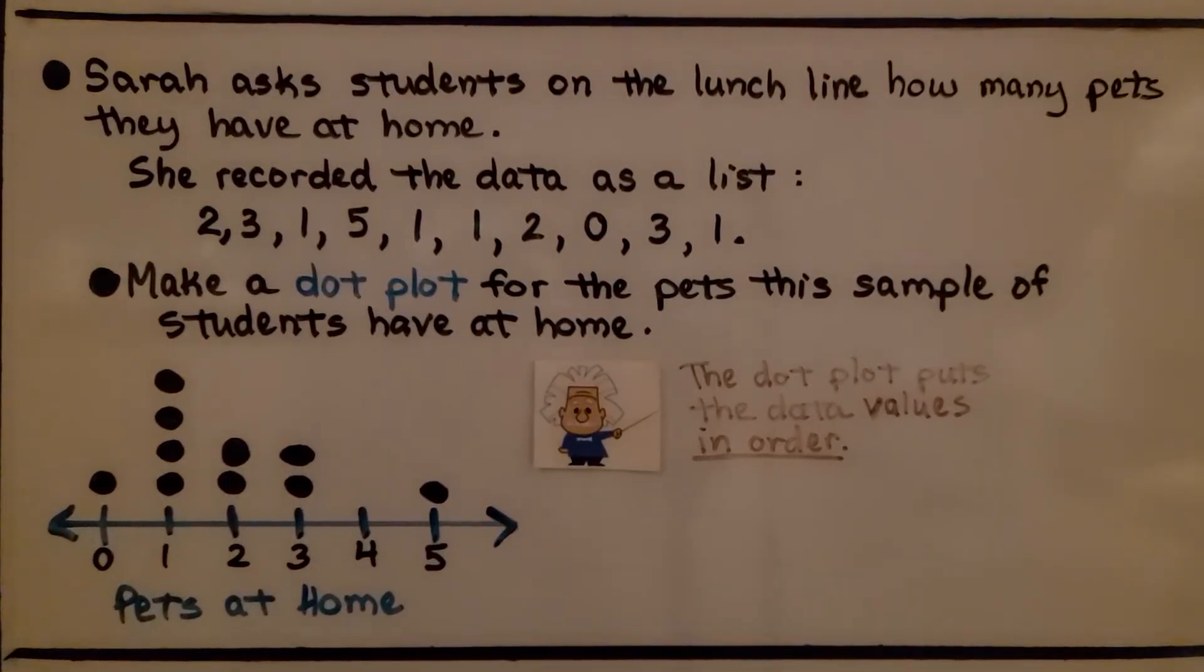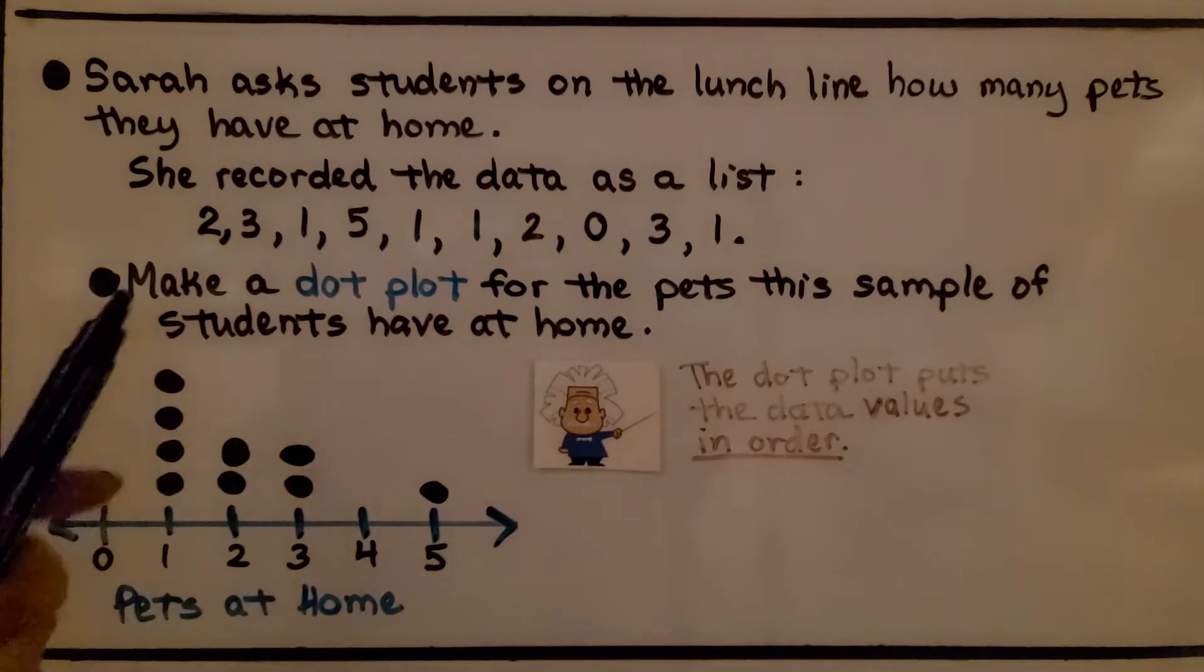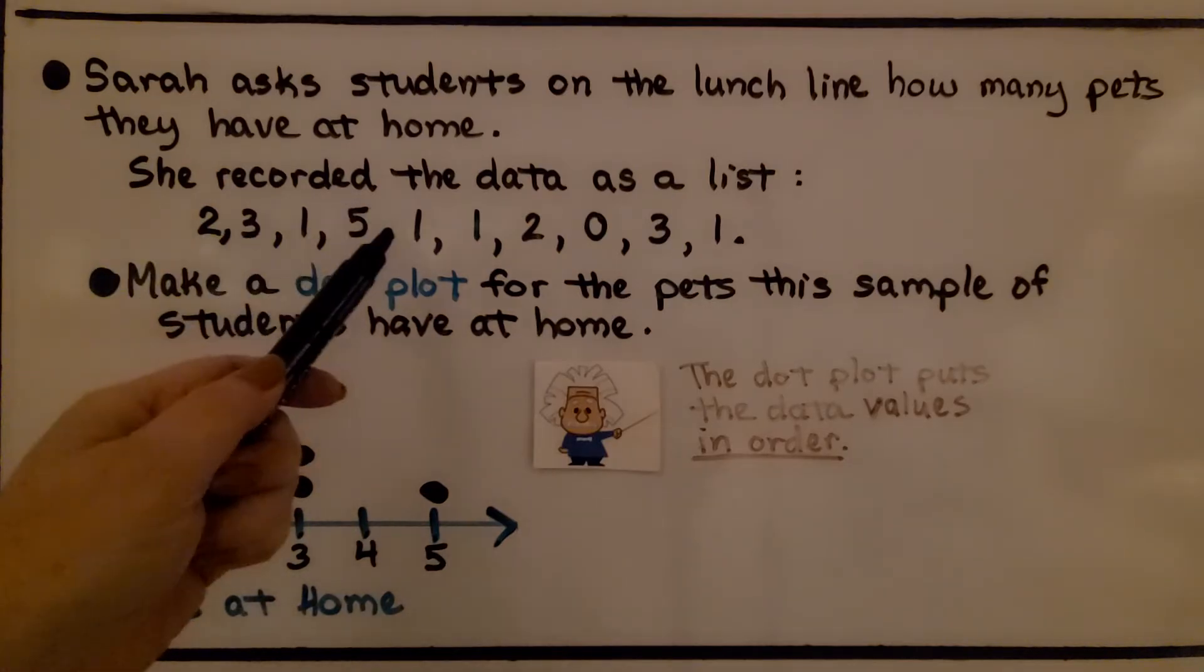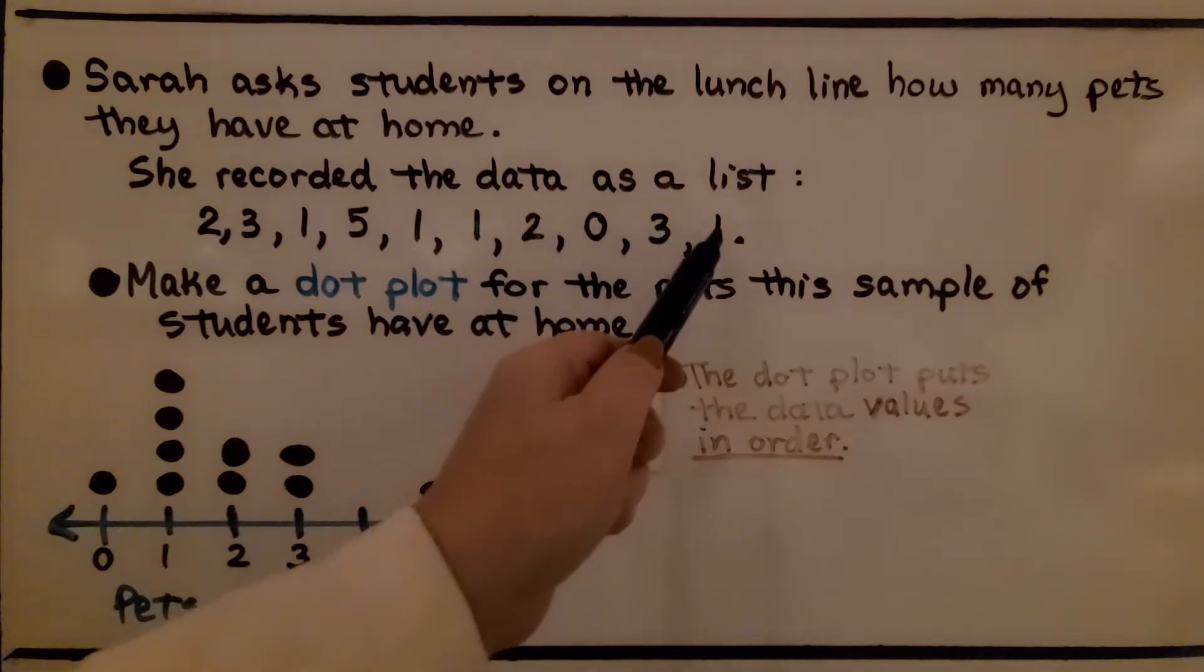Sarah asks students on the lunch line how many pets they have at home. She recorded the data as a list. The answers were 2, 3, 1, 5, 1, 1, 2, 0, 3, 1.